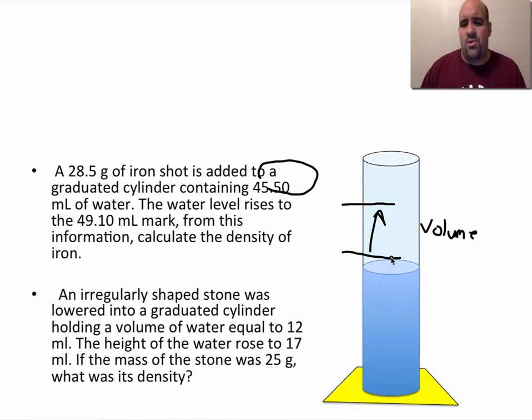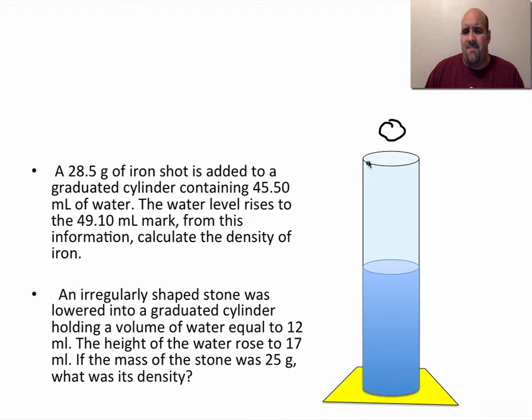And now we're going to do a couple of density problems involving volume displacement. 28.5 grams of iron shot, so let's say you had a piece of iron kind of like a BB, a big BB of iron. You're dropping it into a graduated cylinder, the water level is going to rise. It started at 45.50 milliliters.